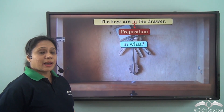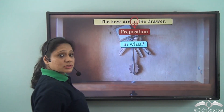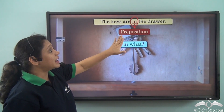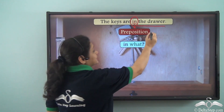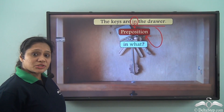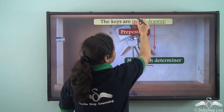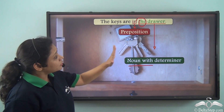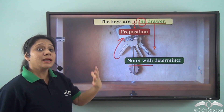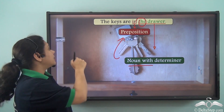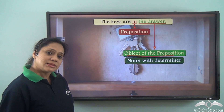Now let us look at this example: 'The keys are in the drawer.' In this sentence, 'in' is the preposition. The keys are where? In the drawer. So 'the drawer' is completing the meaning of the preposition. The drawer is a noun along with the determiner 'the,' and it is being governed by the preposition 'in.' Hence, 'the drawer' is the object of the preposition 'in' in this sentence.